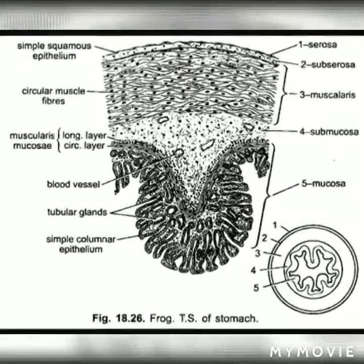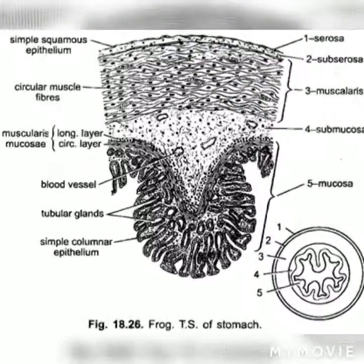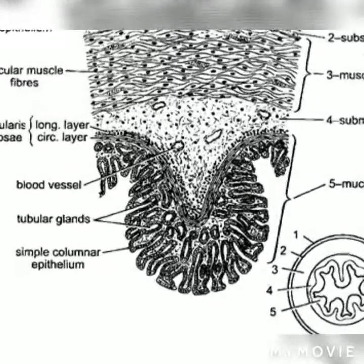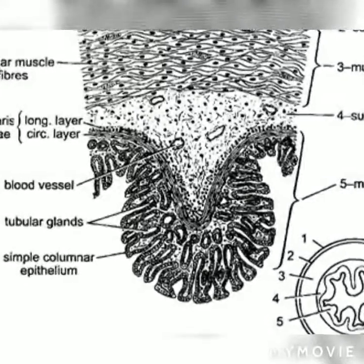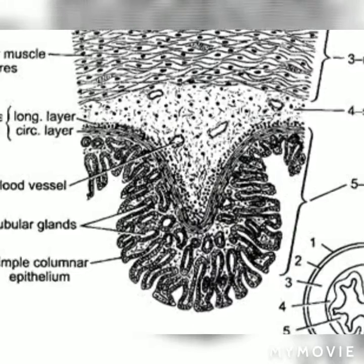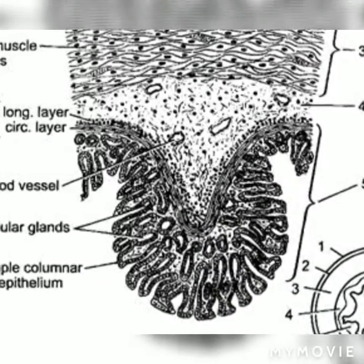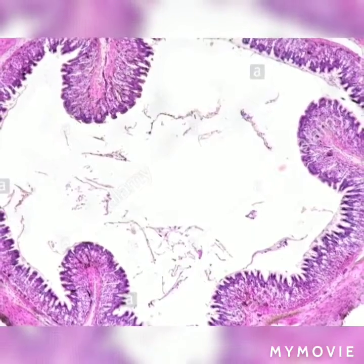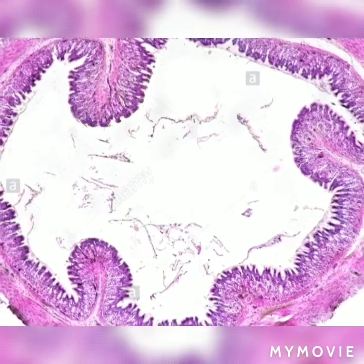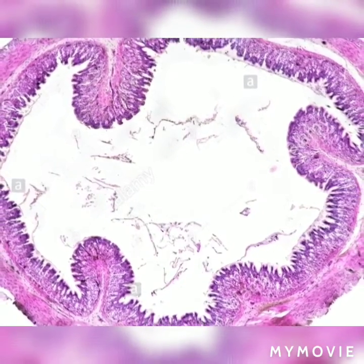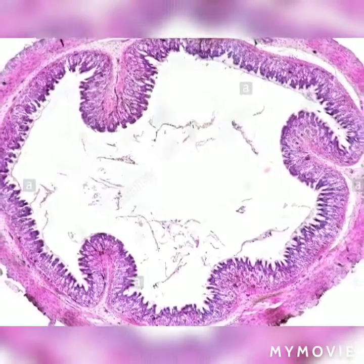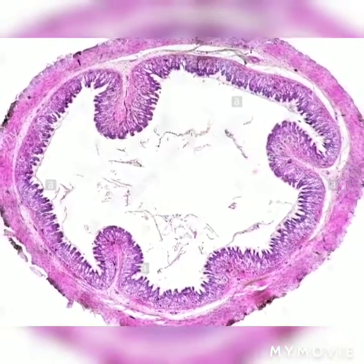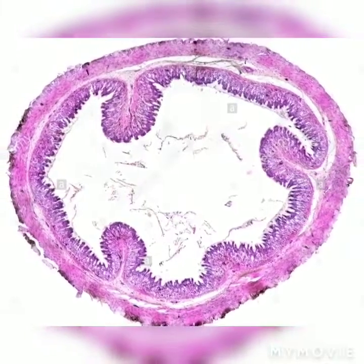Hello friends, let's learn the study of histological slides on TS of stomach of frog and TS of esophagus of frog. Comments on transsection of stomach of frog: it is composed of five layers, that is serosa, sub-serosa, muscularis, sub-mucosa, and mucosa. The serosa is thin and made up of a single layer of cells.